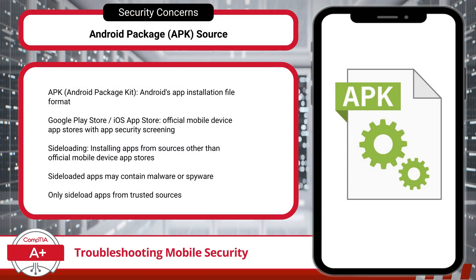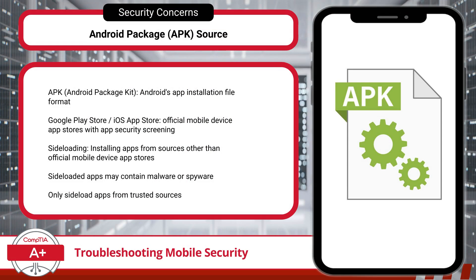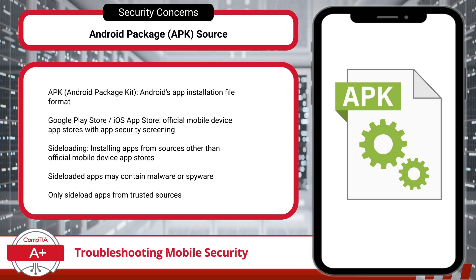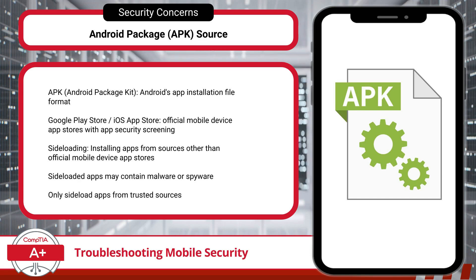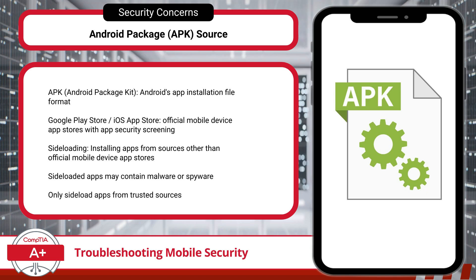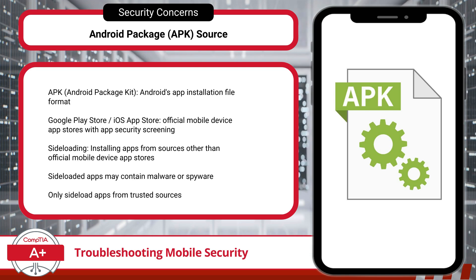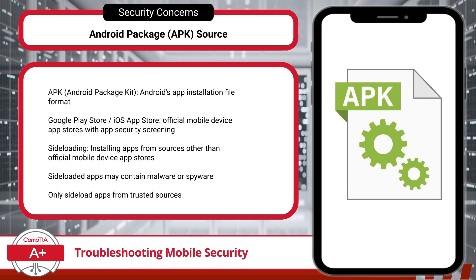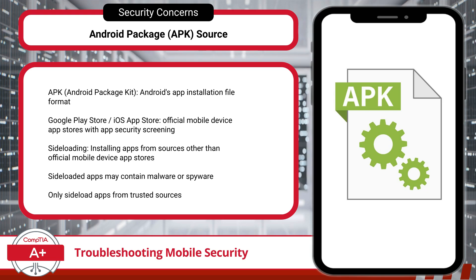Let's begin by looking at some of the common security concerns that make mobile OS security a challenge. Understanding these risks is crucial for protecting both the device and its data, whether it's for personal use or professional settings. Starting off, we have APK Source Concerns. For Android users, apps are generally downloaded from the Google Play Store, which screens apps for security threats. However, Android also allows users to sideload APK files, installing apps from sources outside the Play Store. APK stands for Android Package Kit.